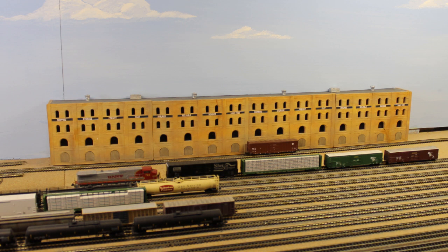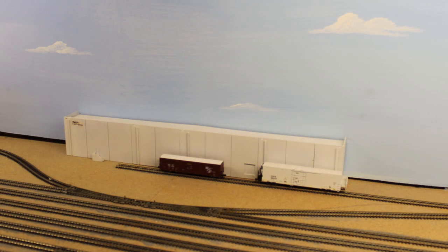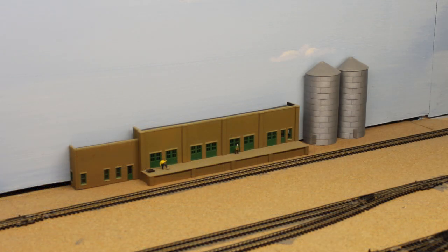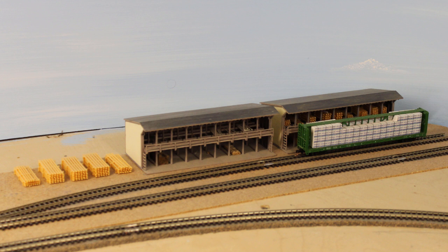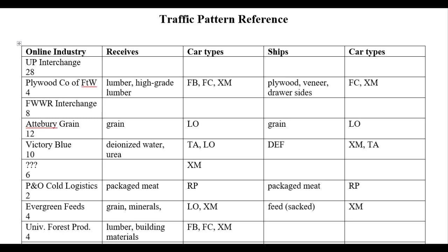This large warehouse is undecided as to exactly what it's going to be - I've changed my mind several times - but it can handle up to 6 cars at a time and will primarily switch boxcars. Next, we have P&O Cold Logistics, which receives frozen meat products in refrigerator cars and can hold 2 cars at a time. Evergreen Feeds receives grain and mineral supplements and ships out bagged livestock feeds, handling covered hoppers and boxcars with 4 car spots. And finally, Universal Forest Products can handle 4 cars, receiving primarily lumber on center beam flat cars and other building materials in boxcars.